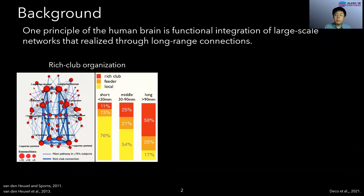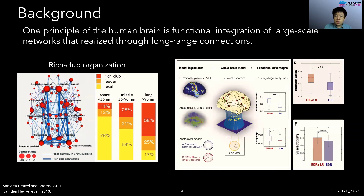One principle of the human brain is functional integration of large-scale networks realized through long-range connections. Taking advantage of multi-modal neuroimaging data, we can construct brain networks. Although most connections in the brain network are short range, a small number of long-range connections play a crucial role in integrating information. For example, a previous study found that rich club hubs connecting to more brain regions are important to the brain network, and rare long-range connections play a crucial role in significantly improving information processing and success probability.